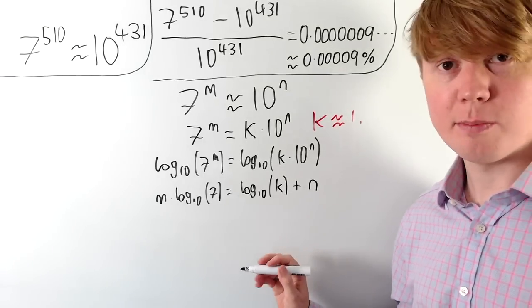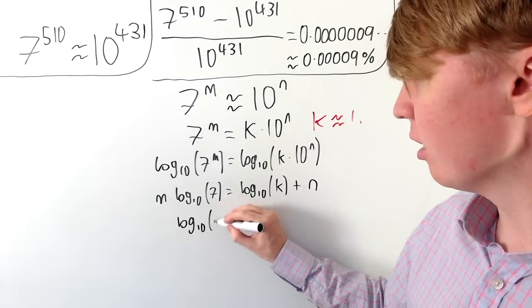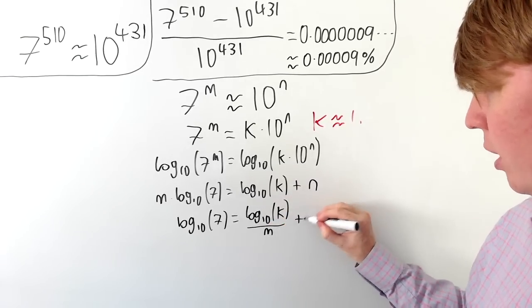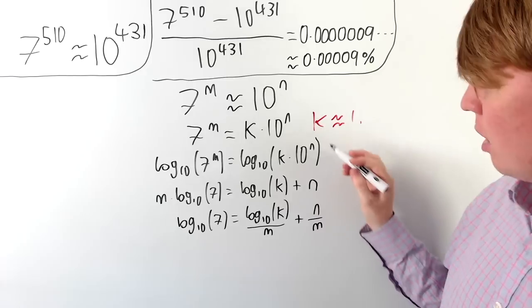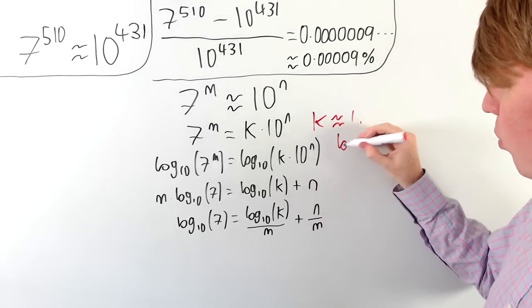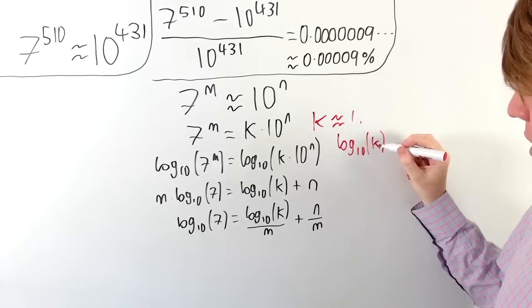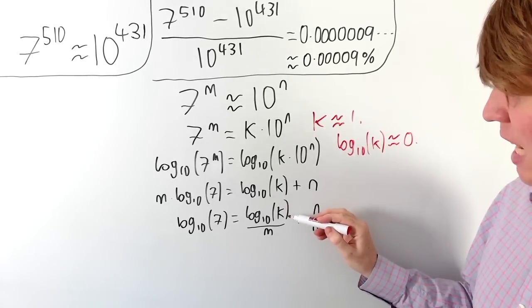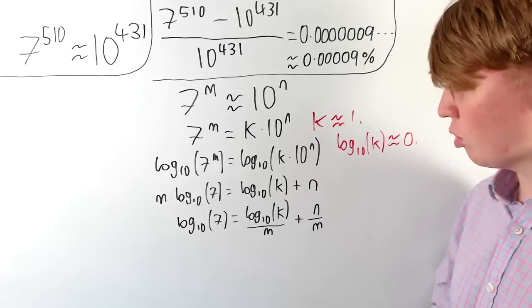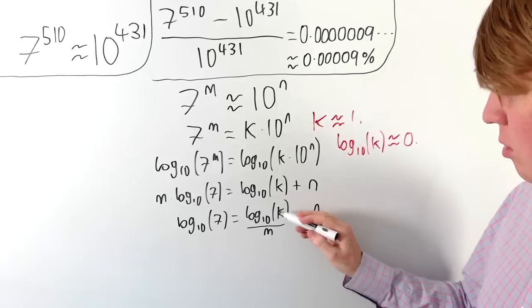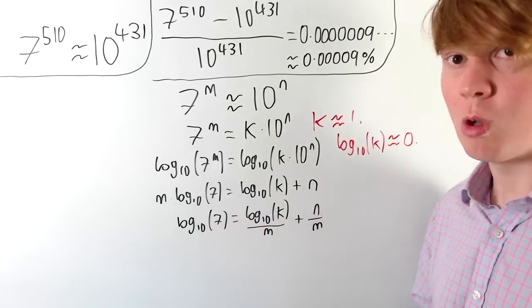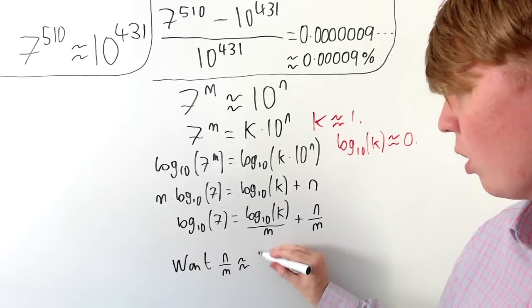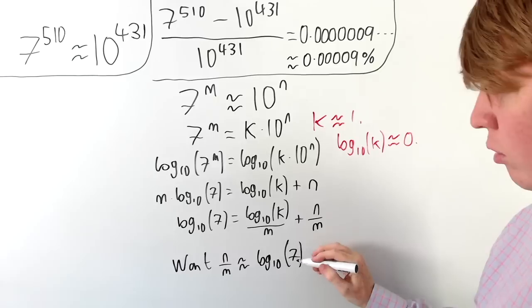Dividing both sides by m, we get log base 10 of 7 equals log base 10 of k over m plus n over m. We're looking for k to be approximately equal to 1. Since log base 10 of 1 is 0, we want log base 10 of k to be as close to 0 as possible. So we want to choose n and m such that n over m is approximately equal to log base 10 of 7.